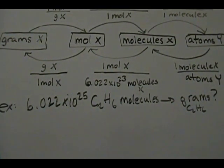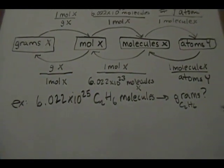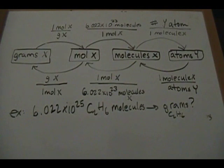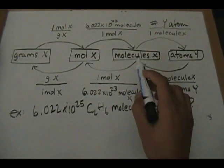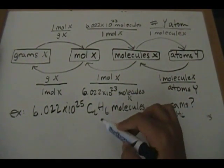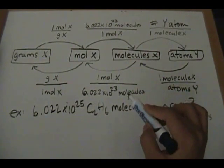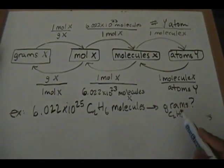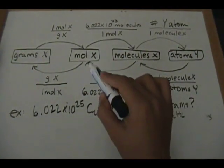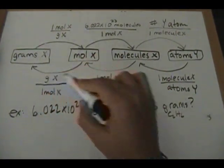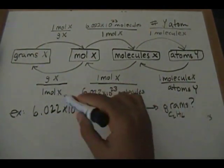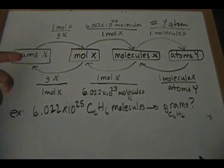Using the same systematic approach, we have to determine where our starting point is. Our starting point is molecules of X — molecules of C₂H₆. We're trying to go from molecules of ethane to grams of ethane, so we're going to use the bottom set of arrows, using these bottom conversion factors, which is basically the inverse of the top ones.